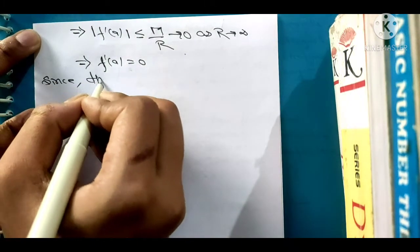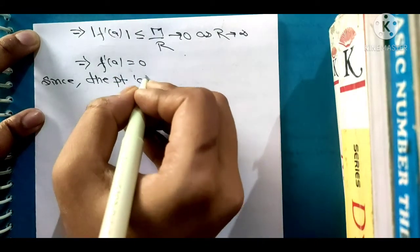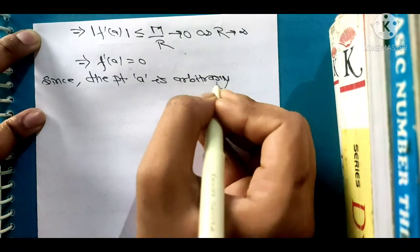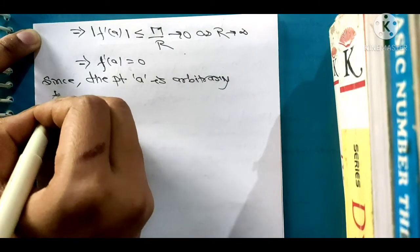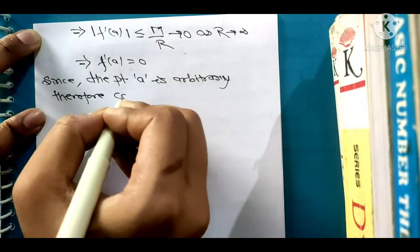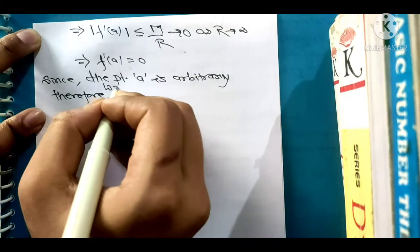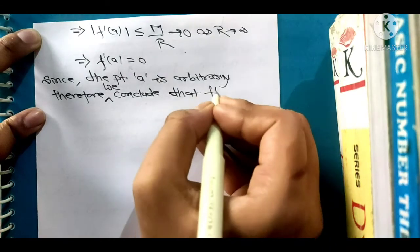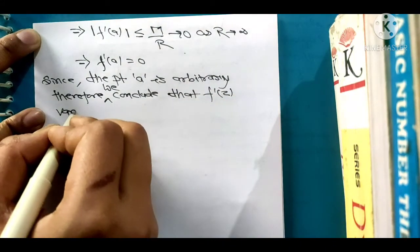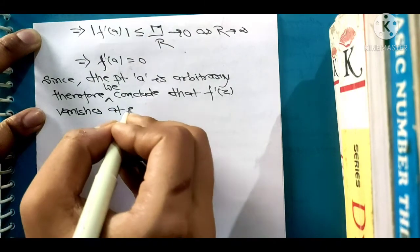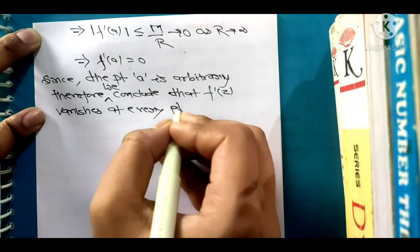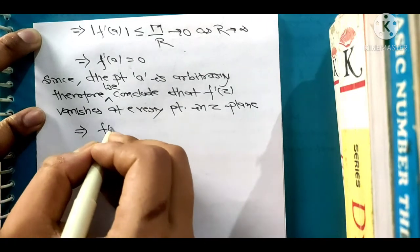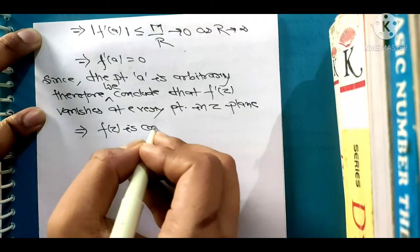Since the point a is arbitrary, therefore we conclude that f'(z) is equal to 0.